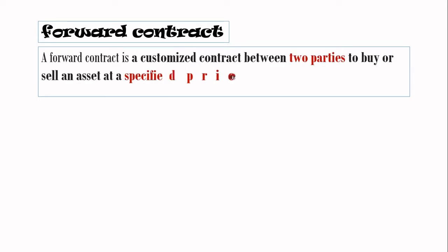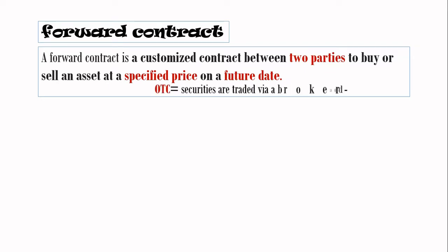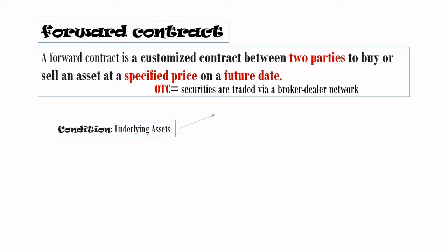A forward contract is a customized contract between two parties to buy or sell an asset at a specified price on a future date. This contract happens in the OTC, or over-the-counter, market, which is the market where securities are traded by a broker-dealer network. When doing a forward contract, there must be an underlying asset.